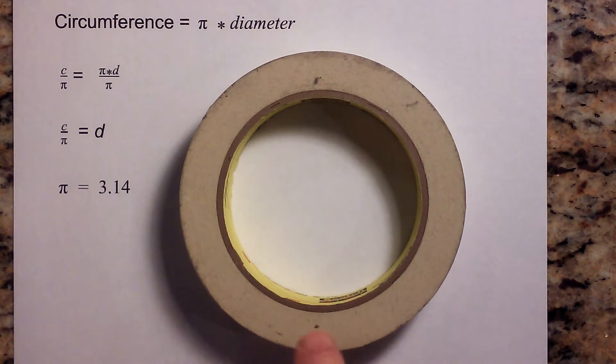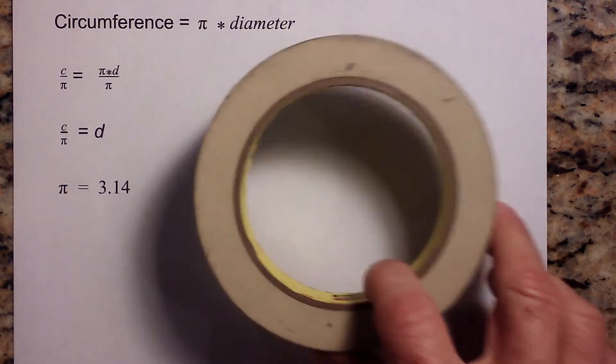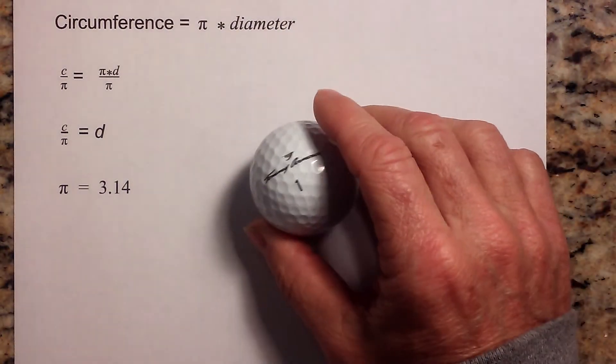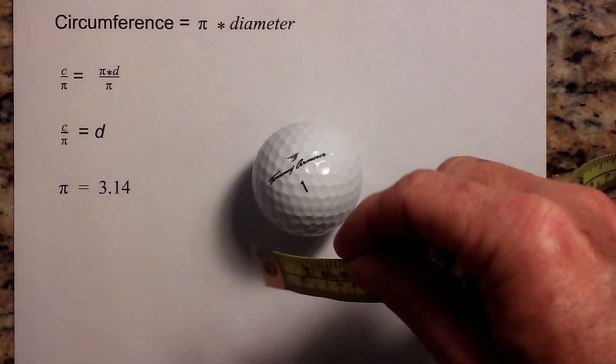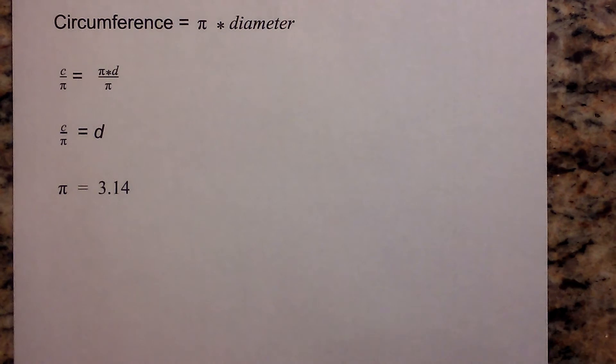Whenever you have a circle, it's very easy to get the diameter because you can just measure from here to here. But whenever you have an object like a sphere like this golf ball, it's a little more challenging to measure straight across.